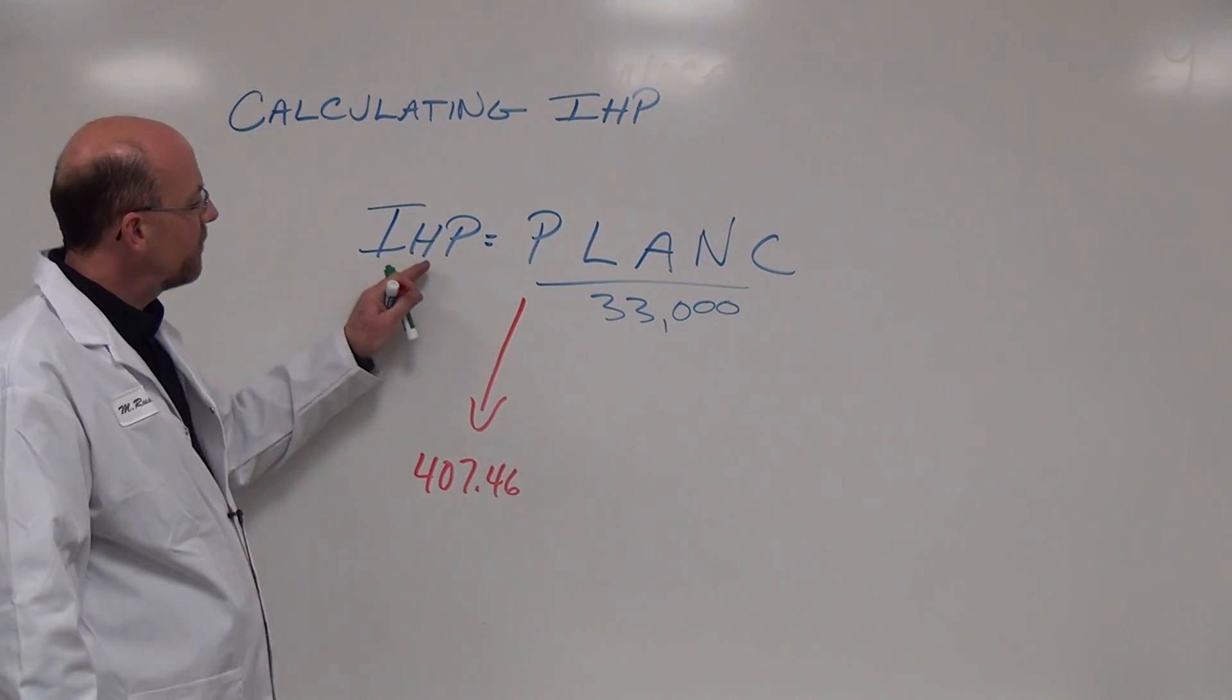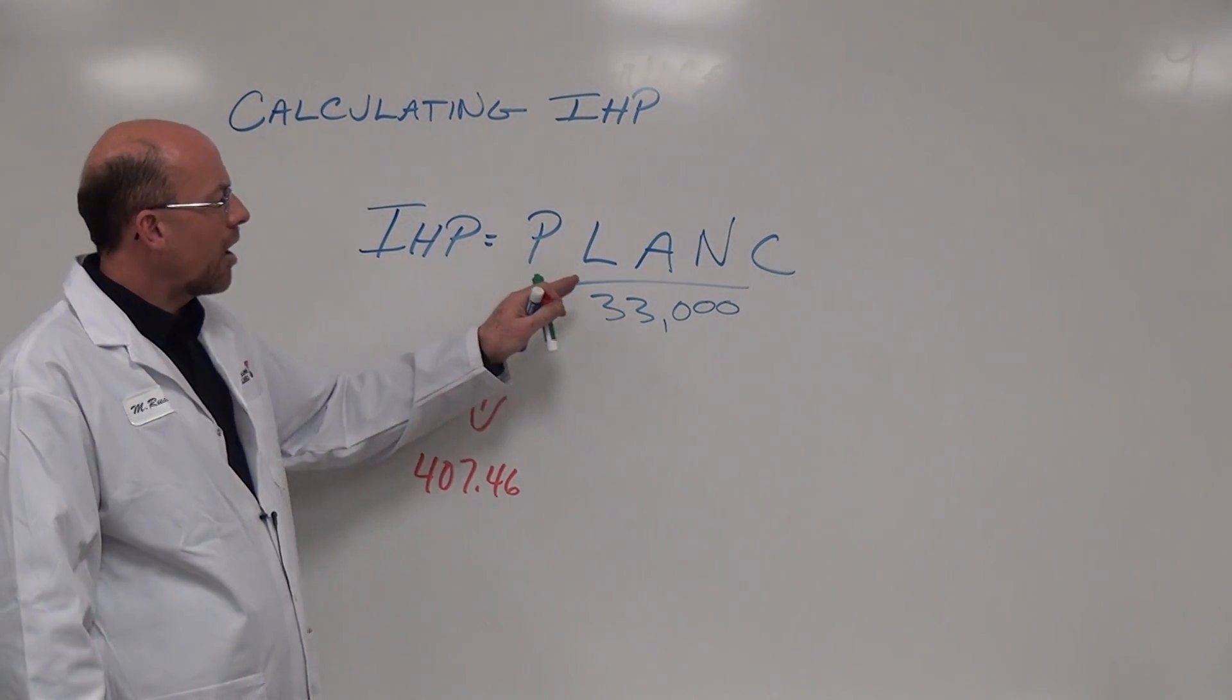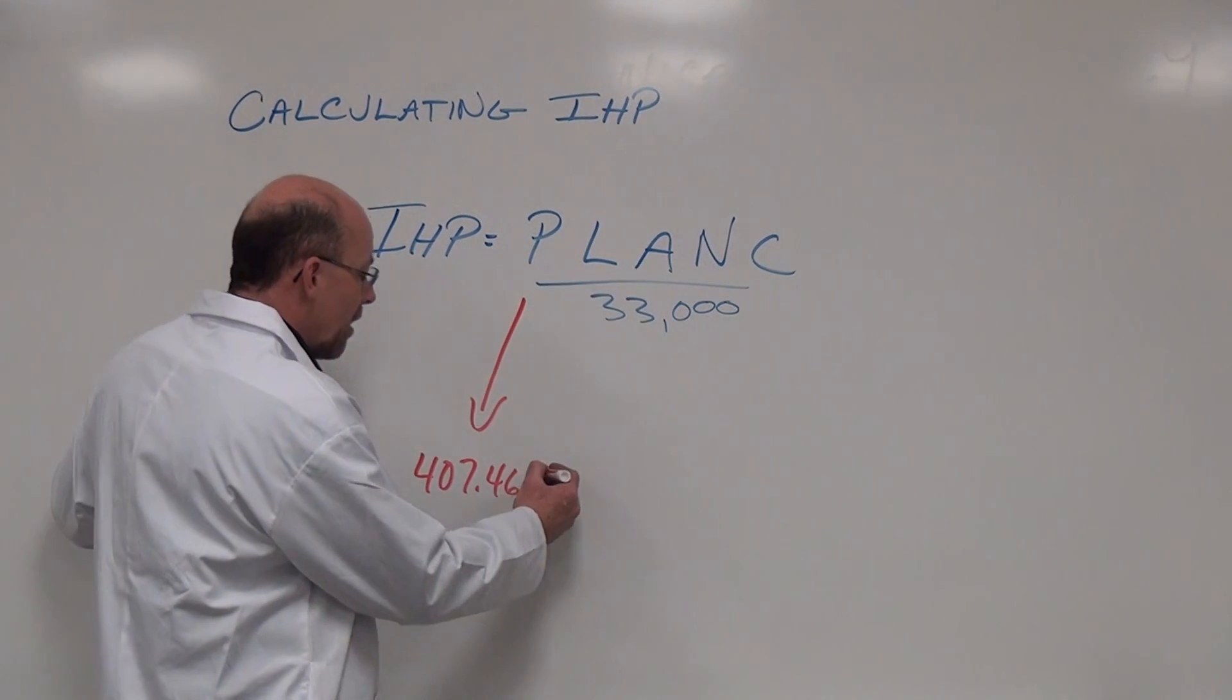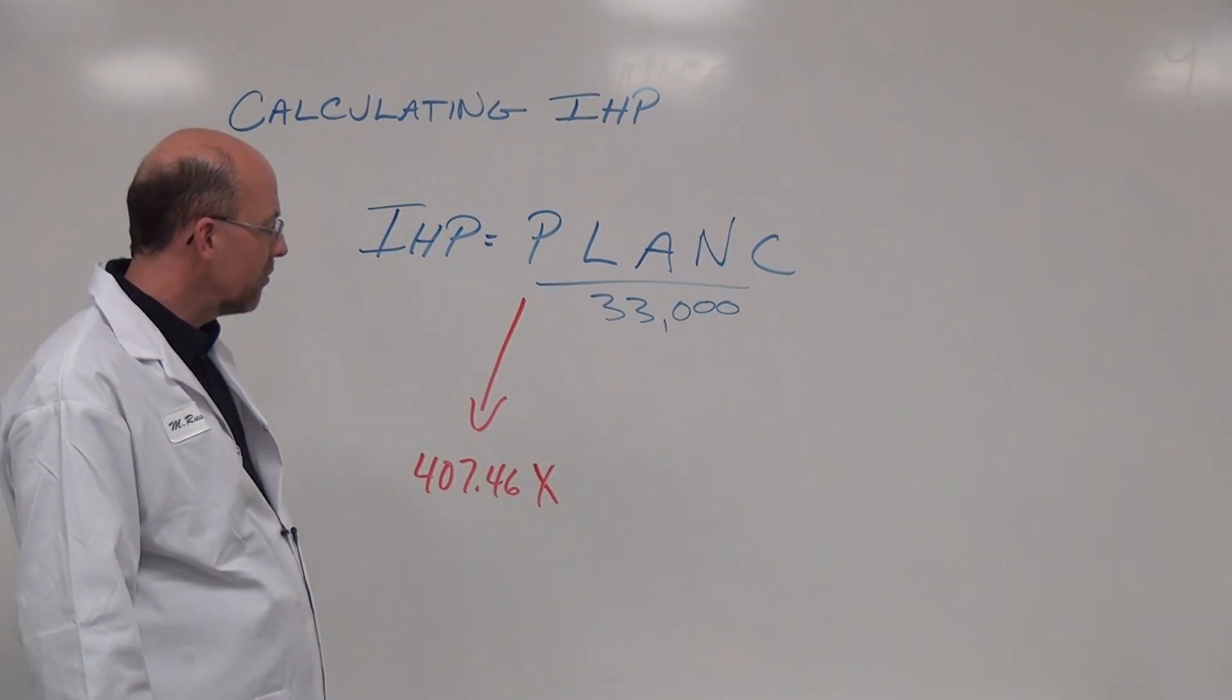As I mentioned before, in the indicated horsepower calculation these are factors, so they become multiplied times each other until they're divided by 33,000.